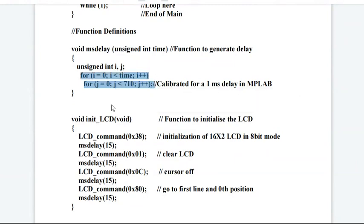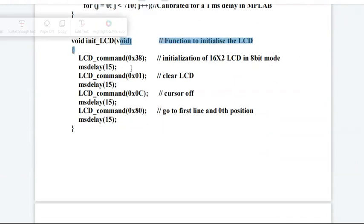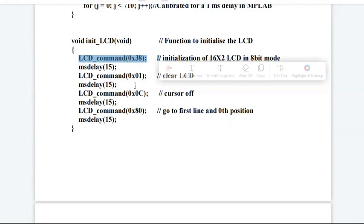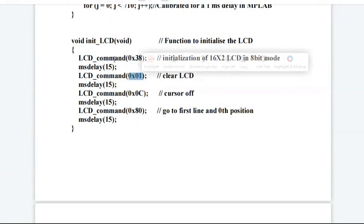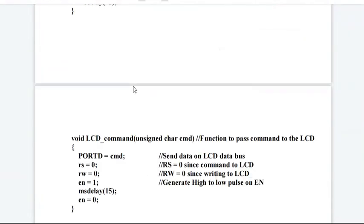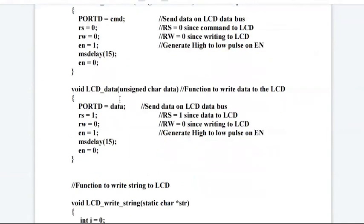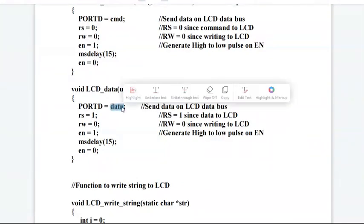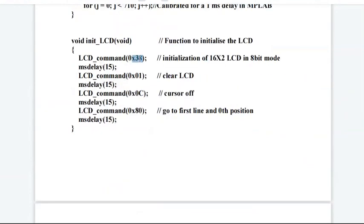In LCD initialization function definition, you can see there are different commands used. In my earlier video in one of the slides, I have shown you the different LCD commands. There are two registers in LCD: command register and data register. Whenever you are sending a command, the command register will be used, and whenever we are sending data, the data register will be used. These are the commands; after every command we are calling a delay of 15 milliseconds.